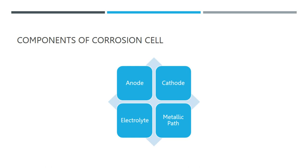The cathode is the corrosion cell's second component — this is where protection takes place. In the corrosion cell, the cathode is the location where electricity is transferred chemically from the electrolyte to the metal's surface. The metal passes electrons to the electrolyte during this chemical reaction, which is known as a reduction reaction.